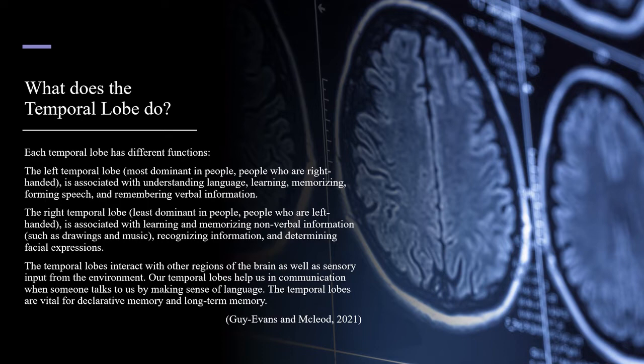The temporal lobes interact with other regions of the brain as well as sensory input from the environment. Our temporal lobes help us in communication by making sense of language when someone talks to us. The temporal lobes are vital for declarative memory and long-term memory.